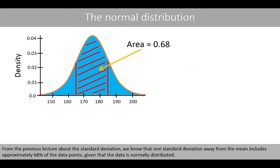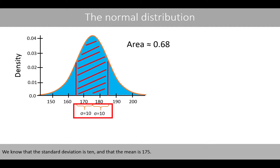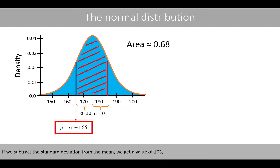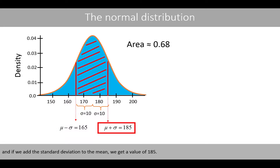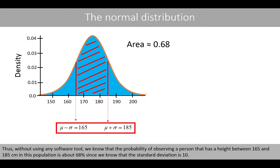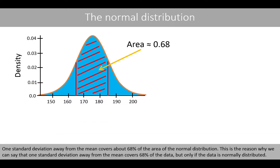From the previous lecture about the standard deviation, we know that one standard deviation away from the mean includes approximately 68% of the data points, given that the data is normally distributed. We know that the standard deviation is 10 and the mean is 175. If we subtract the standard deviation from the mean, we get 165, and if we add it to the mean, we get 185. Thus, without using any software, we know that the probability of observing a person with a height between 165 and 185 is about 68%. One standard deviation away from the mean covers about 68% of the area of the normal distribution — but only if the data is normally distributed.